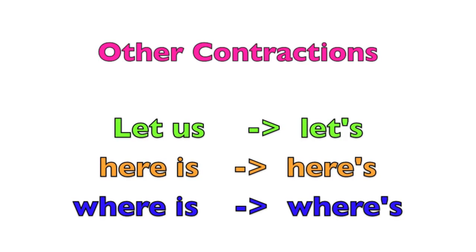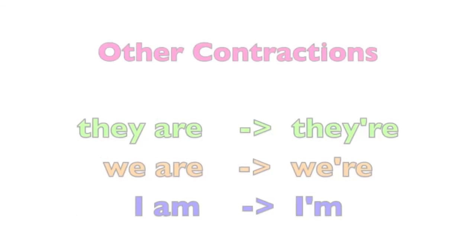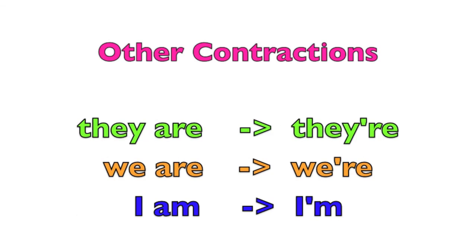Here are some other contractions. Let us becomes let's. Here is becomes here's. Where is becomes where's. They are becomes they're. We are becomes we're. I am becomes I'm.